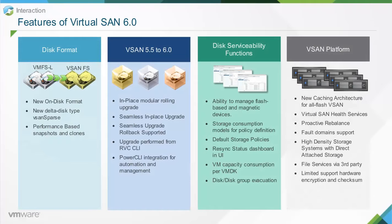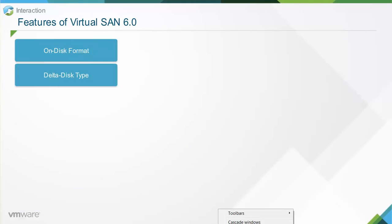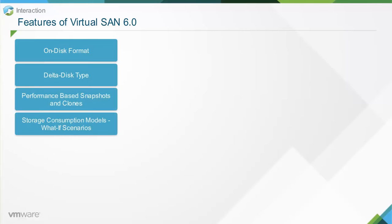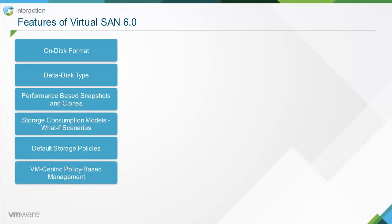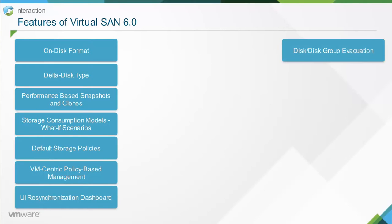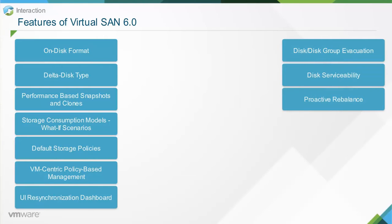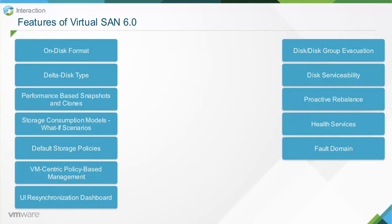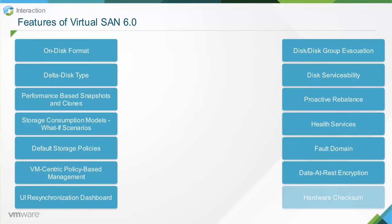Virtual SAN 6.0 enhances the user management experience with the following improved features: on-disk format, delta disk type, performance-based snapshots and clones, storage consumption models, default storage policies, VM-centric policy-based management, UI resynchronization dashboard, disk or disk group evacuation, disk serviceability, proactive rebalance, health services, fault domain, data at rest encryption, and hardware checksum.